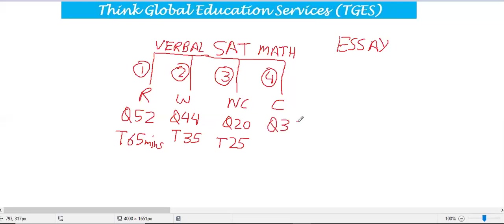The Calculator section has 38 questions and the time is 55 minutes. The structure is fixed, so you must follow the timeline for every individual section. If you finish Writing in 30 minutes, you cannot use the leftover time for another section — the first 65 minutes are dedicated to Reading, the next 35 to Writing, the next 25 to No Calculator, and the last 55 to Calculator. If you choose to write an essay, that is 50 minutes.